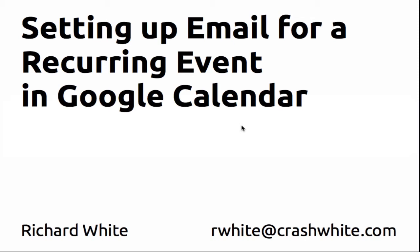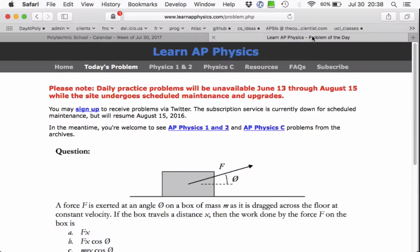Hi everybody, this is Richard White and I'm going to show you real quickly how you can set up an email for a recurring event in Google Calendar. I'm looking at this Learn AP Physics website and they used to send out emails, but now they're not going to do that anymore. They're going to use Twitter for that.